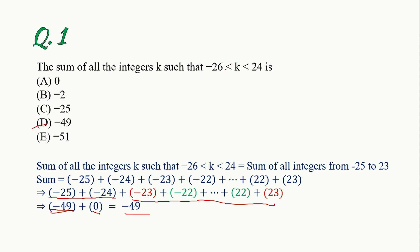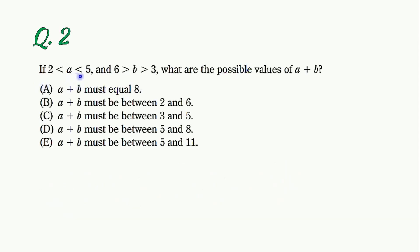If you have a type of question with less than or equal to signs, you will have a different inequality condition. This is question number 2: if 2 is less than a less than 5, and 3 is less than b less than 6, what are the possible values of a plus b? We will consider the higher and lower boundary conditions.